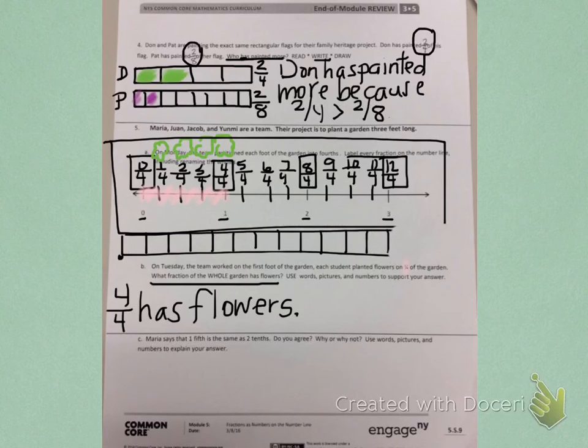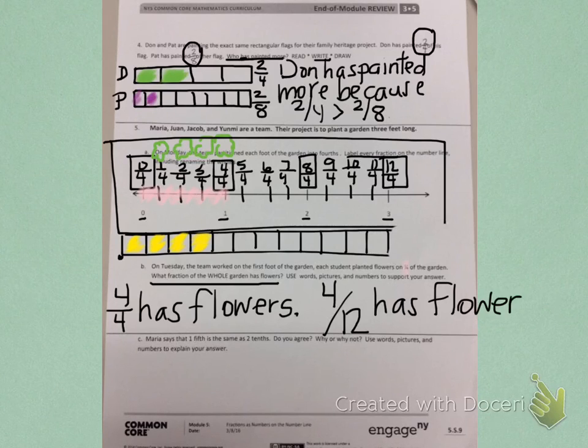When I look at that, I can also shade in what they have completed. They've completed one-fourth, two-fourths, three-fourths, and four-fourths. So, as a fraction, I can say still that four portions are shaded. But my denominator is changing because the picture is different. Now, my denominator is twelve, so I can say four-twelfths has flowers. I know four-twelfths has flowers because I broke the number line into a fraction strip instead of leaving it as a number line.